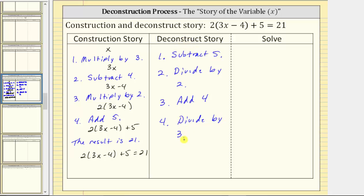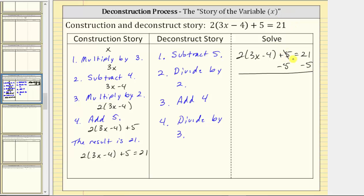The four steps of the deconstruct story are the four steps we perform on both sides of the equation to solve for x. Beginning with the original equation, step one is to subtract five on both sides. So minus five on the left, minus five on the right, and now we simplify both sides. On the left, plus five minus five equals zero, leaving us two times the quantity three x minus four. On the right, twenty-one minus five equals sixteen.